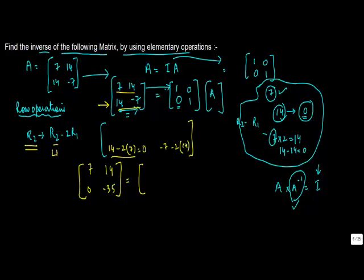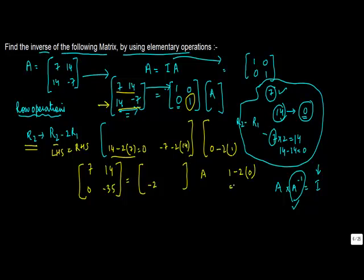Whatever operations you apply on the left-hand side must also be equally applied to the right-hand side. So on the right side, row 1 remains [1, 0]. For row 2, we apply R2 minus 2 times R1: [0 - 2*1, 1 - 2*0] which gives [-2, 1]. So the right side becomes [1, 0; -2, 1].